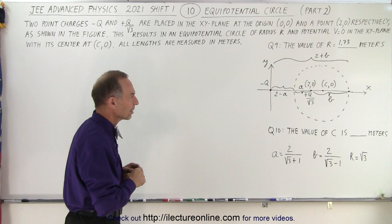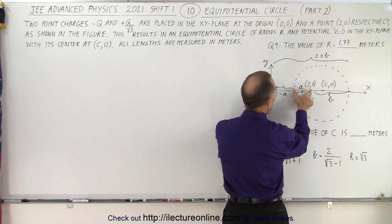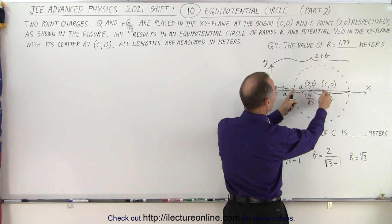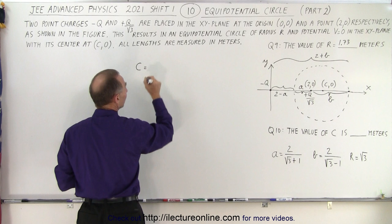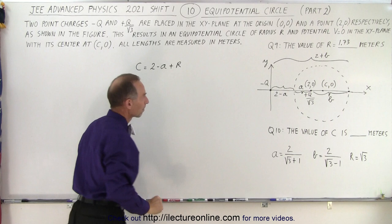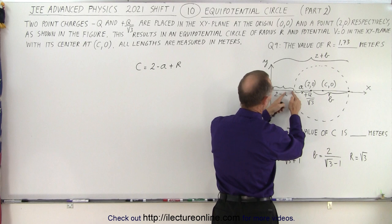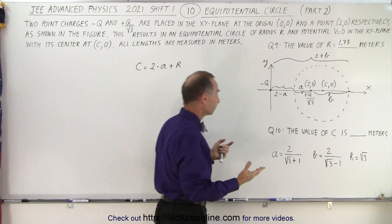Well let's see here, how do we figure that out? Well we know that this is 2 meters, this is A, A is known to be 2 over the square root of 3 plus 1, and then this is the radius. So if we take 2 minus A we get this, if we add the radius to it we get the distance to C. So essentially we can say that C is equal to 2 minus A plus R. Again, if this is 2 meters, we subtract A from it, we get this distance. If we then add the radius to it, we get the distance from here to the center of the circle.